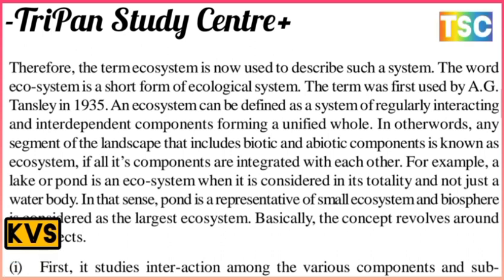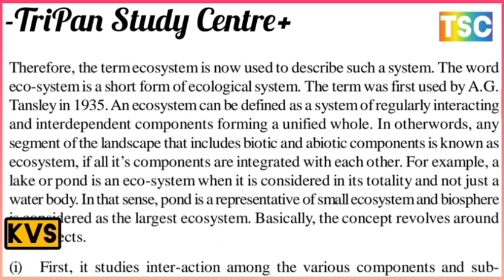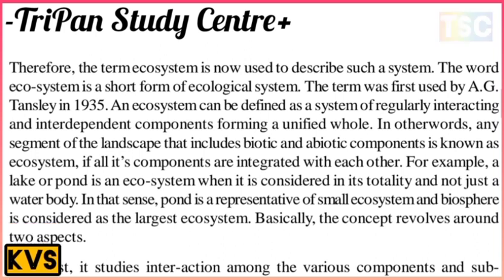Therefore, the term 'ecosystem' is used to describe such a system. The word ecosystem is a short form of 'ecological system.' The term was first used by A.G. Tansley in 1935. An ecosystem can be defined as a system of regularly interacting and interdependent components forming a unified whole. In other words, any segment of the landscape that includes a biotic component is known as an ecosystem.